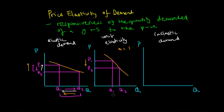As the price decreases from P1 to P2 we see a corresponding proportional increase in the quantity demanded. Similarly, if the price had increased from P2 to P1, we would see a corresponding proportionate decrease in quantity demanded from Q2 to Q1.